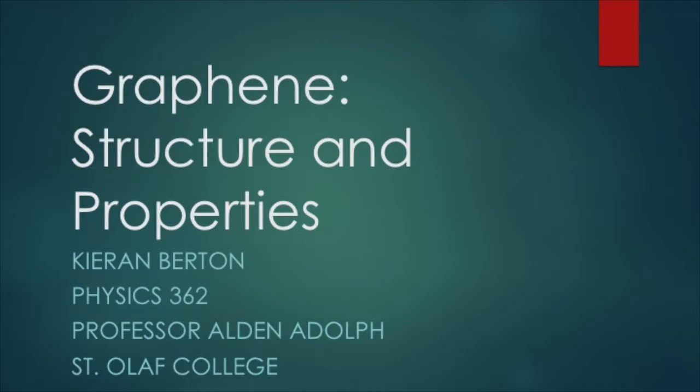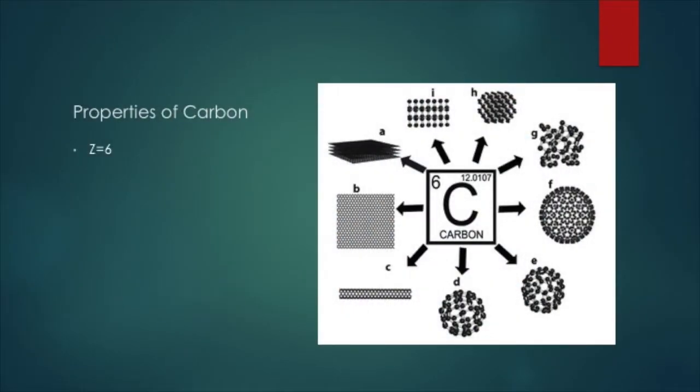As graphene is composed of carbon atoms, I will begin by discussing the properties of elemental carbon. Carbon is the sixth element in the periodic table, with six electrons surrounding its nucleus. Typically, the four electrons in carbon's outer orbitals form covalent bonds with other atoms when carbon forms compounds or is arranged in a crystal structure.